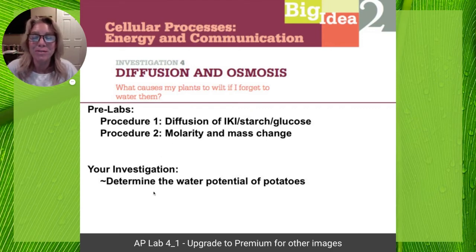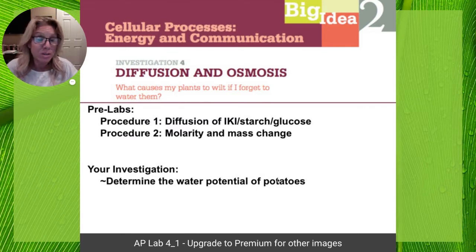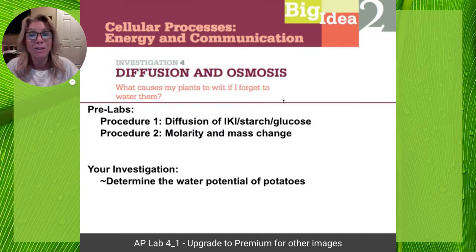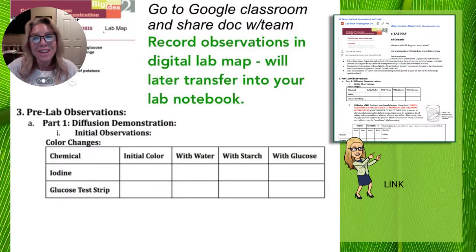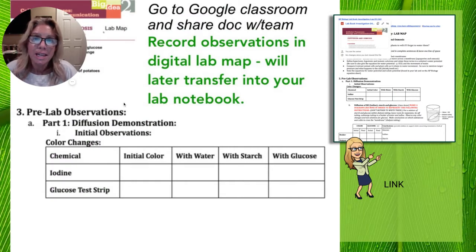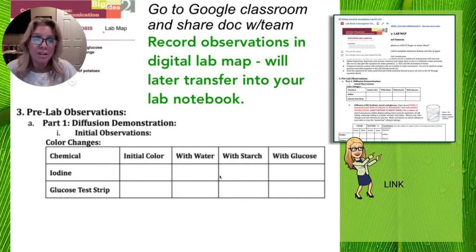The second part of your investigative lab is you're going to look at the water potential of potatoes and try to understand why water would move in or out, just like your plant if you forget to water it. We're going to work with different solutions, and you need to understand their color and how you can tell if they have moved or not.